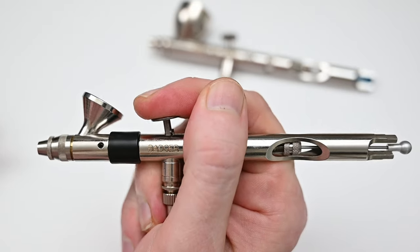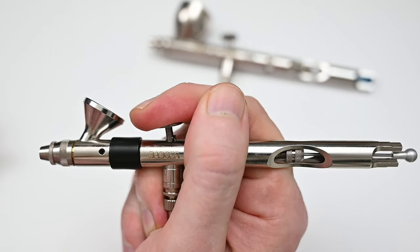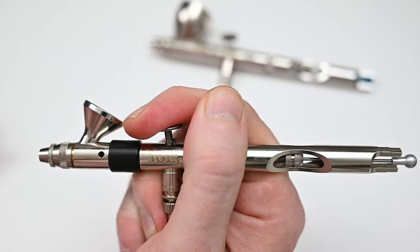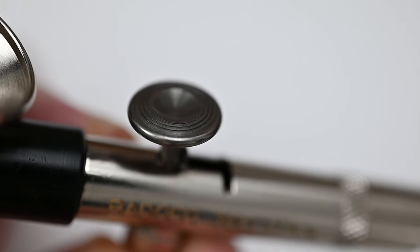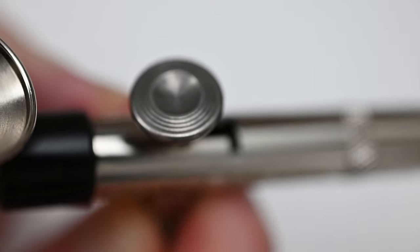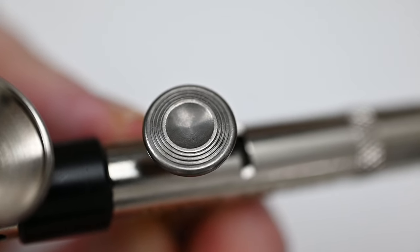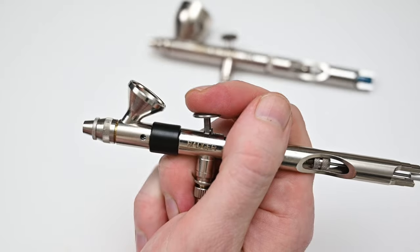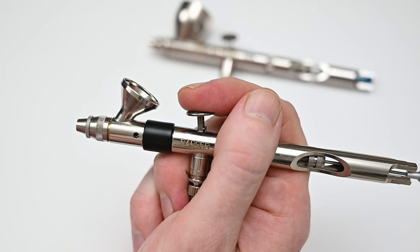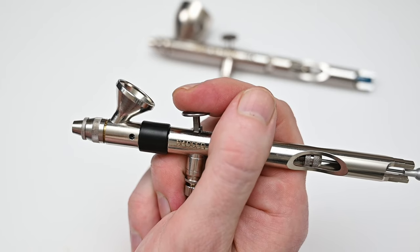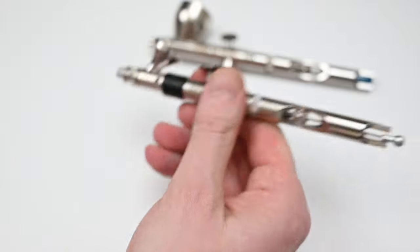In the hand, the Badger 360 feels extremely comfortable. It's very similar and nearly identical to the Patriot 105. The trigger feels very soft and comfortable, and it's Badger's standard round-top design. I've always been a huge fan of Badger's trigger design. It's simple, it's comfortable, and it offers a great amount of grip. And this trigger is identical to the one in the Patriot 105.